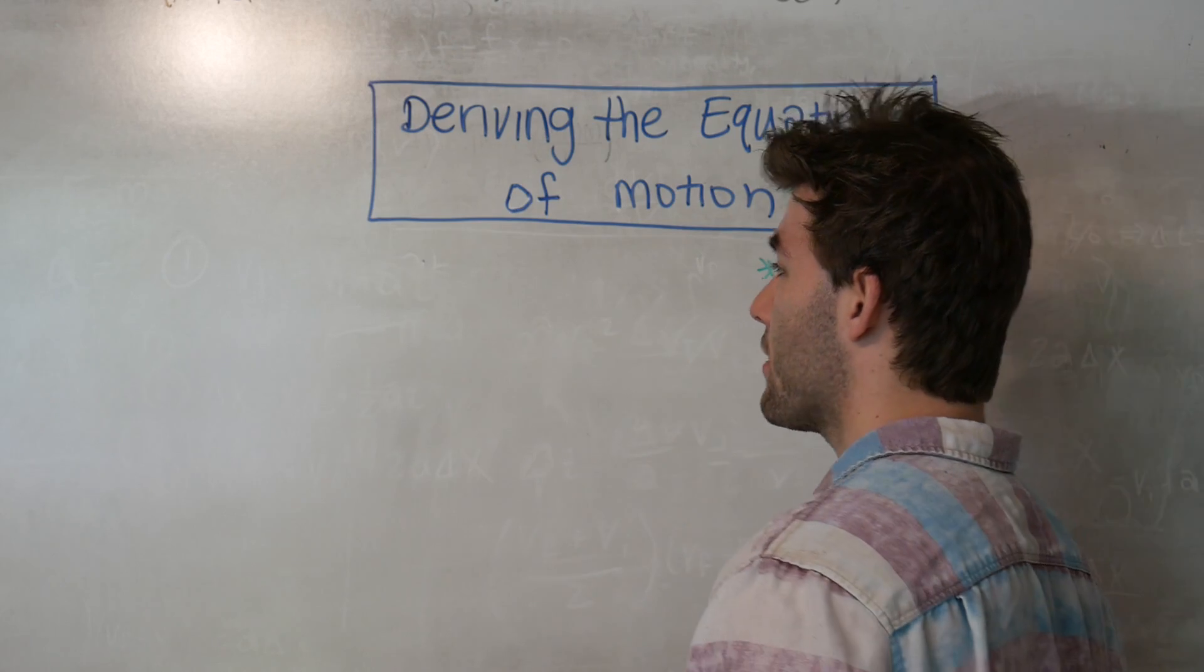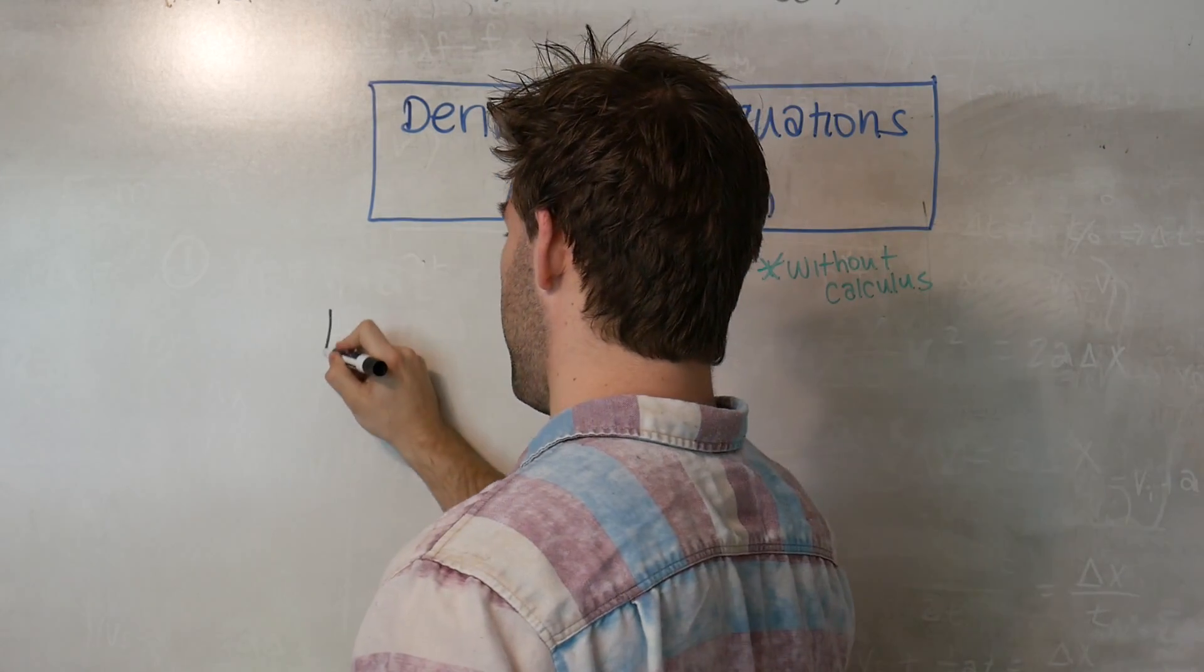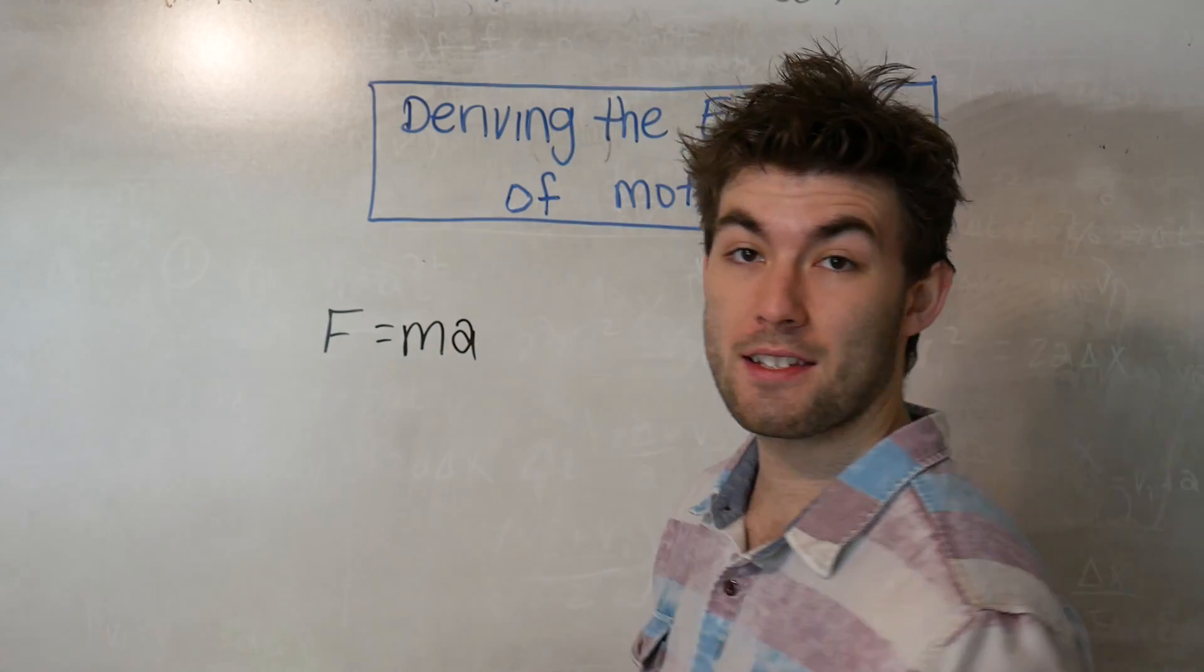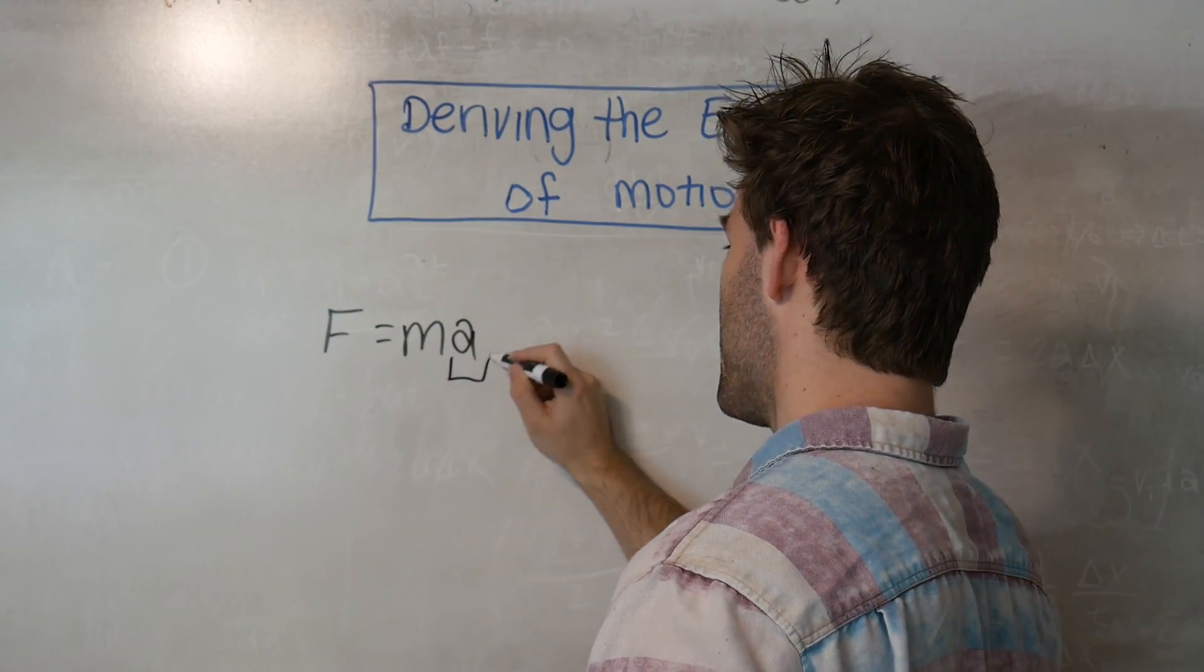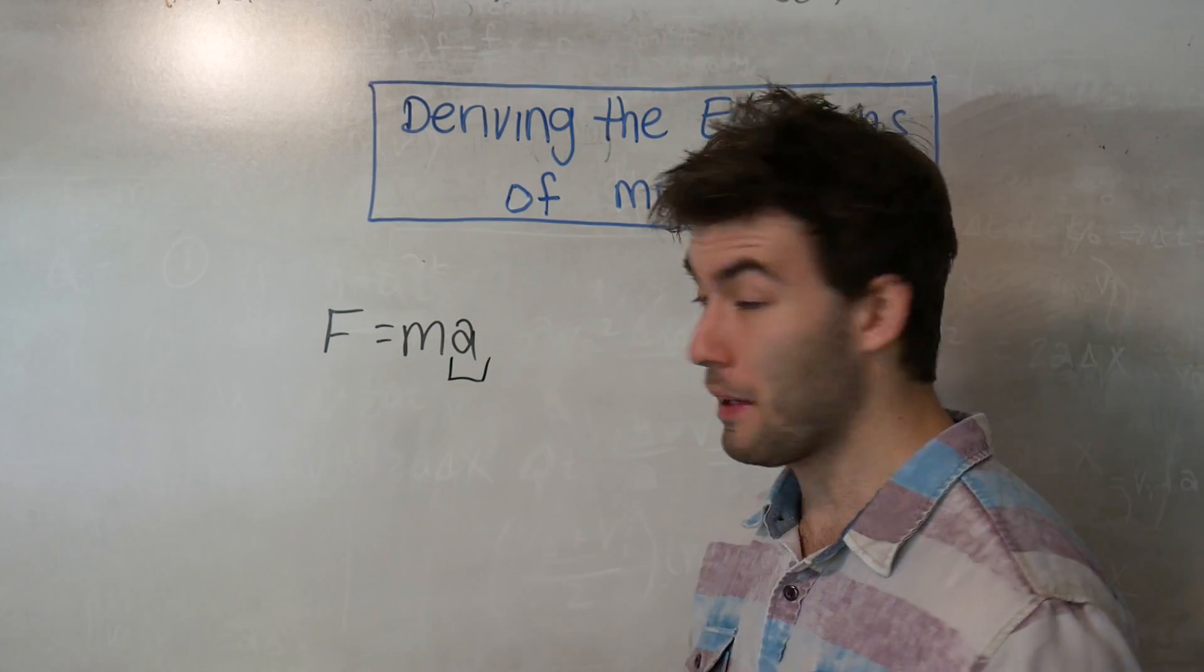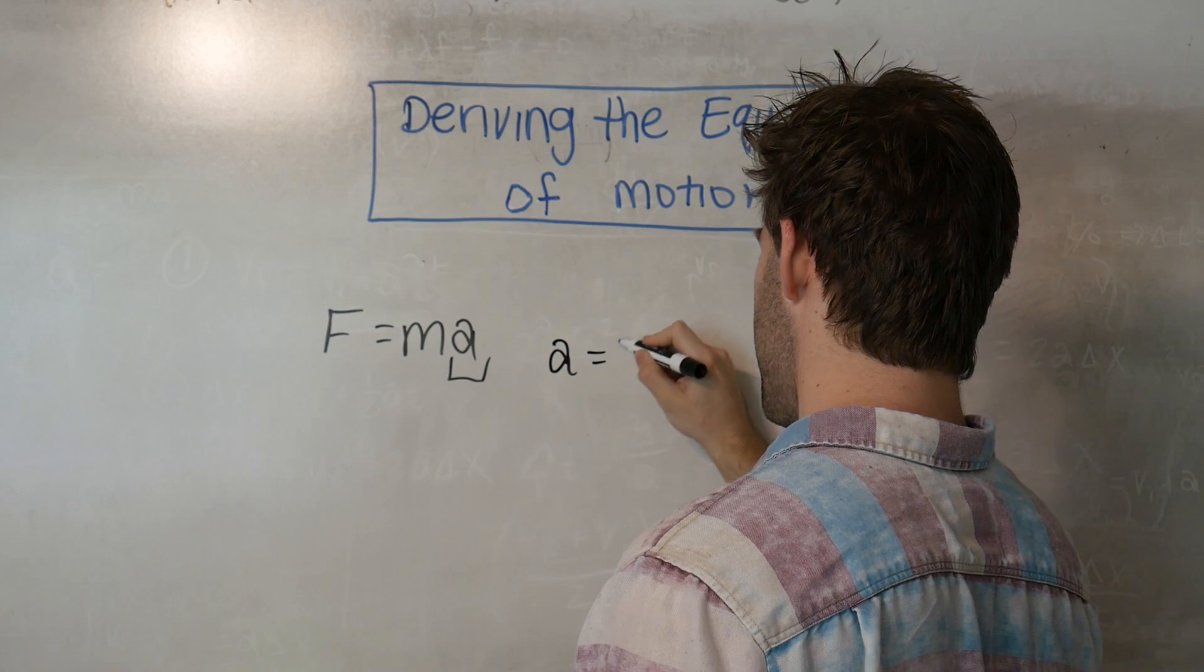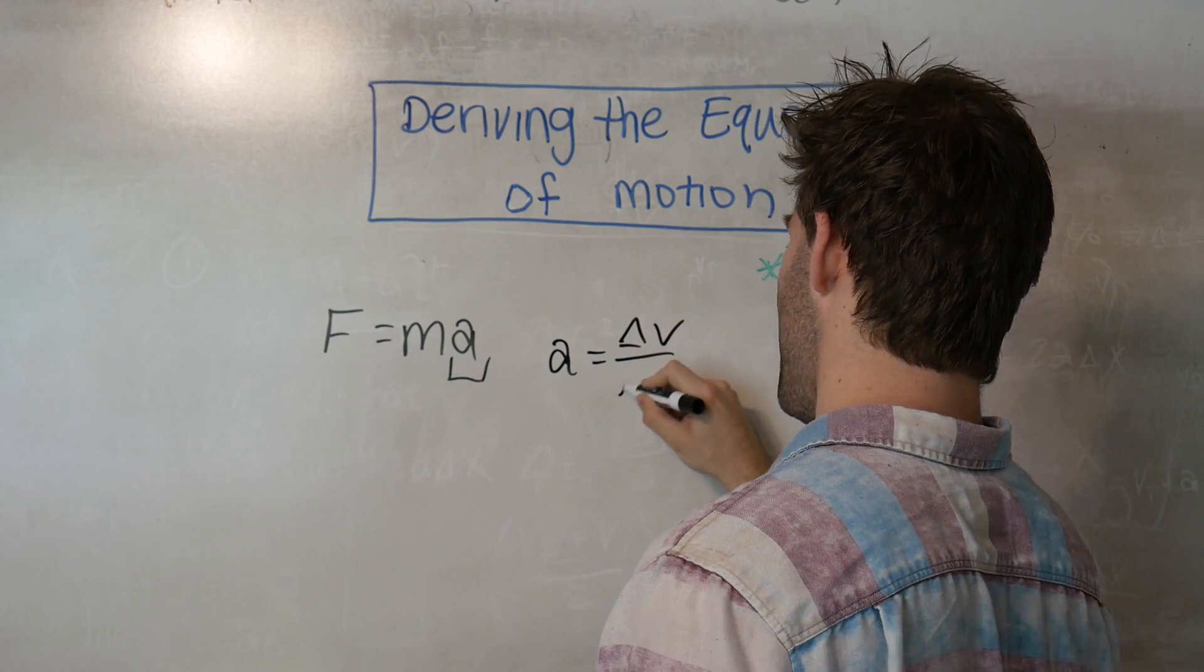To get into the first equation of motion, we're going to take a look at the first axiom of physics, force equals mass times acceleration. Now if we zoom in on the acceleration term, we want to define what we mean by that. And what the acceleration is, is a change in velocity over a change in time.